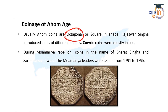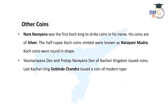There may be a direct question on the shape of Ahom coins. The answer is octagonal, as they had eight sides. Rajas Soringa introduced various coin types, with Kori coins mostly in use. During the Moamaria Rebellion, coins in the names of Barat Singha, Harbananda, and Ramakanta were also issued. Regarding Koch kingdom coinage, Naranarayan was the first Koch king to strike coins. His coins were in silver, including the half-rupee denomination, and those coins were round in shape.